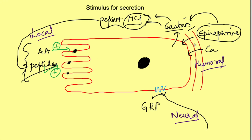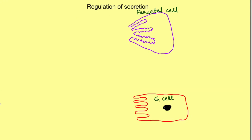While there are multiple stimuli for gastrin secretion, there should also be an inhibitor. H+ ions can act on G cells and basically inhibit the secretion of gastrin from them. So let's see how the regulation of gastrin secretion occurs.